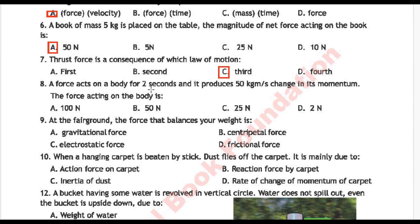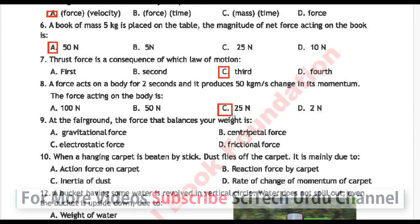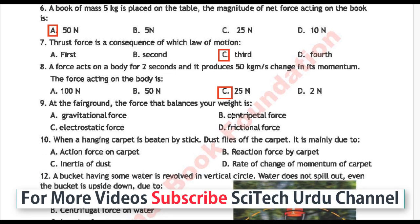Next question number 8: A force acts on a body for two seconds and produces 50 kilogram meter per second change in its momentum. The force acting on the body is — Option A: 100 Newton, Option B: 50 Newton, Option C: 25 Newton, Option D: 2 Newton. Correct answer is Option C: 25 Newton.